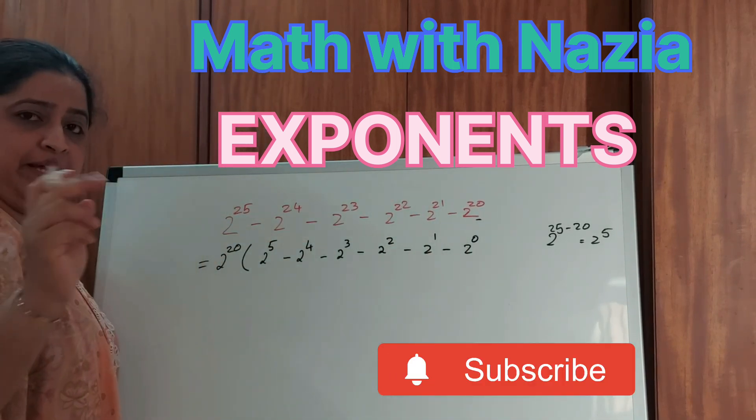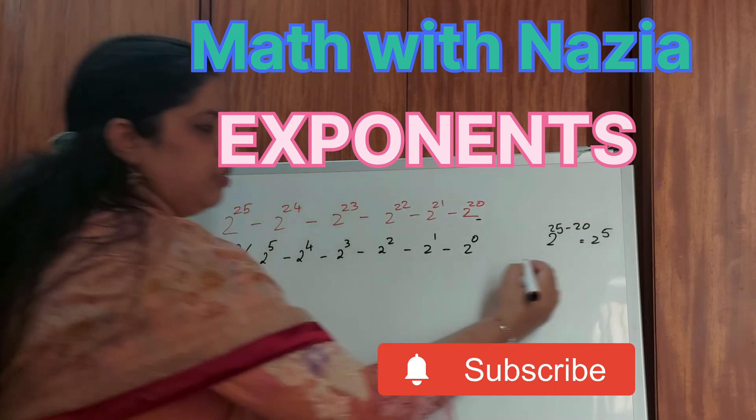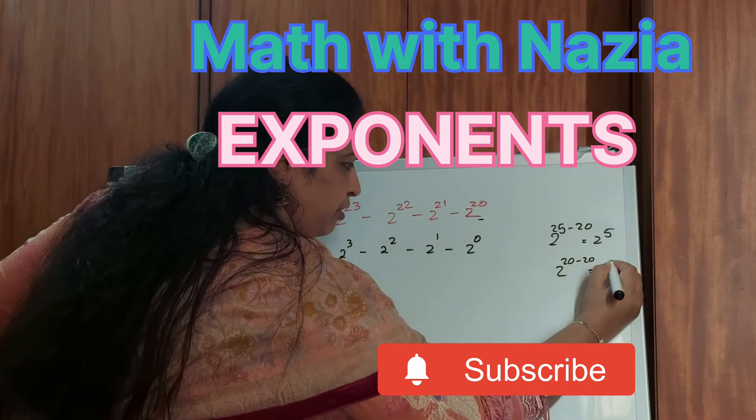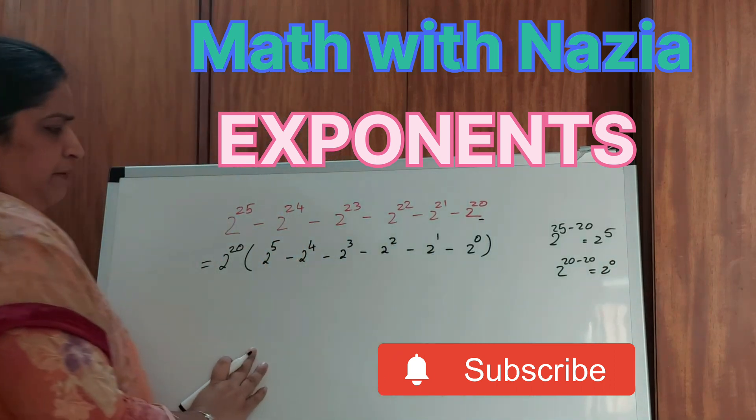Since we have taken 20, 20 minus 20 will be 0. I can write it here for your reference, 20 minus 20. This will give it as 2 to the power of 0. Here closes our bracket.